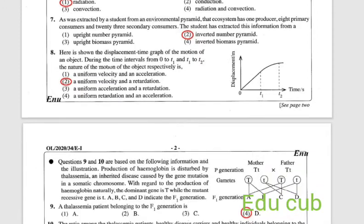Let's move to the eighth question. Here is shown a displacement-time graph of the motion of an object. During the time intervals from 0 to T1 and T1 to T2, the nature of motion of the object respectively is: uniform velocity and acceleration, uniform velocity and retardation, uniform acceleration and retardation, or uniform retardation and acceleration. You can see 0 to T1 there is a velocity, T1 to T2 there is retardation. So answer is the second one.